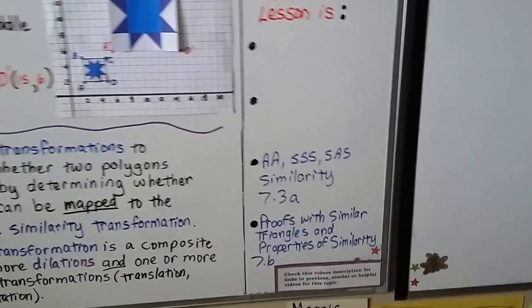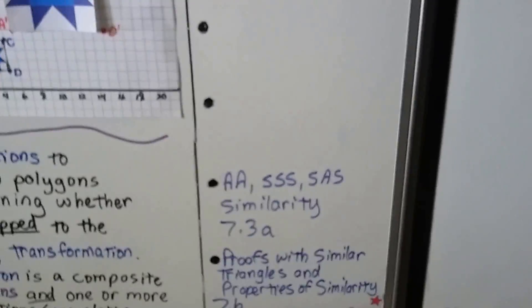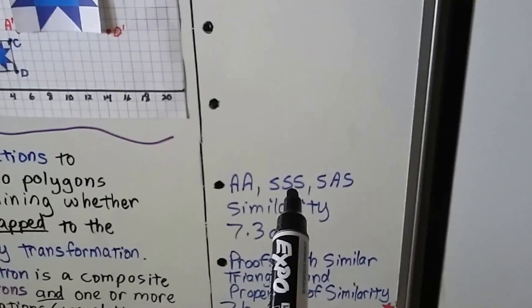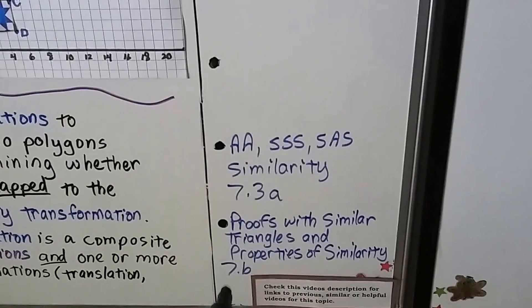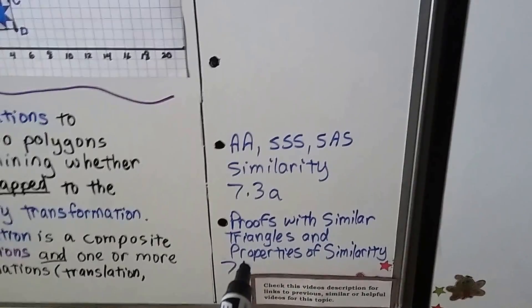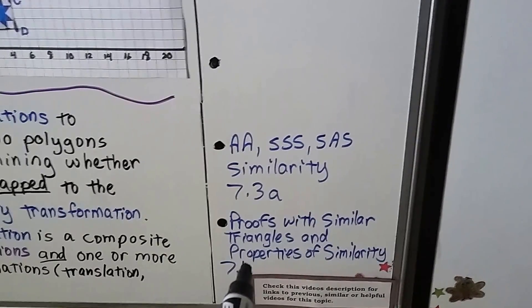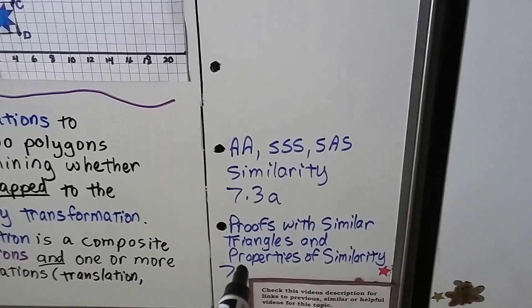Our next lesson is 7.3a, and we're going to talk about angle-angle, side-side-side, and side-angle-side similarity, before moving on to the second part of 7.3a, which is proofs with similar triangles and properties of similarity.